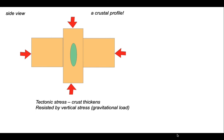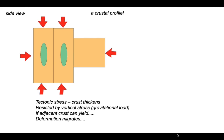The deformation will be able to continue for as long as the tectonic stress outcompetes the vertical stress. But when these two stresses become more equal, there'll be no driving force for the deformation. So it can either stop, or if the adjacent crust is able to yield, the deformation can continue in that adjacent area and the deformation can migrate.